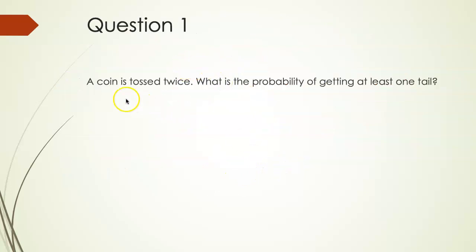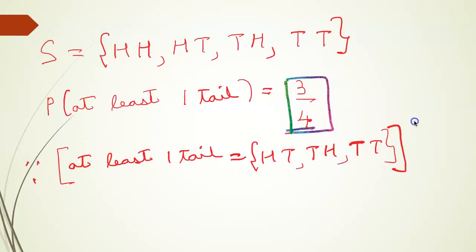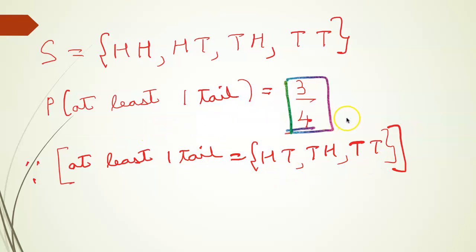Coming to questions: a coin is tossed twice — what is the probability of getting at least one tail? When a coin is tossed twice, the possibilities are both heads, head-tail, tail-head, or tail-tail. So probability of at least one tail is 3 by 4, since number of favorable outcomes is 3 and total number of outcomes is 4.